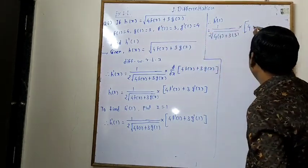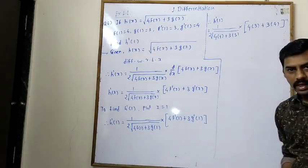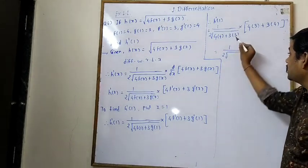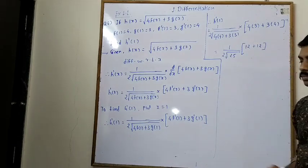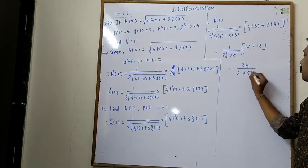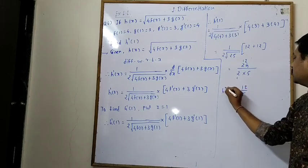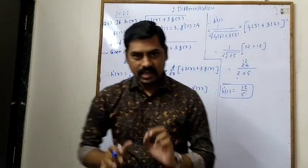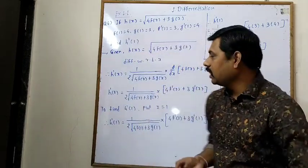From the table: f'(1) = 3 and g'(1) = 4. So 4f(1) = 16, 3g(1) = 9, total = 25. Then 4·3 + 3·4 = 12 + 12 = 24. So h'(1) = 24/(2√25) = 24/(2·5) = 24/10 = 12/5. This is the value of h'(1).